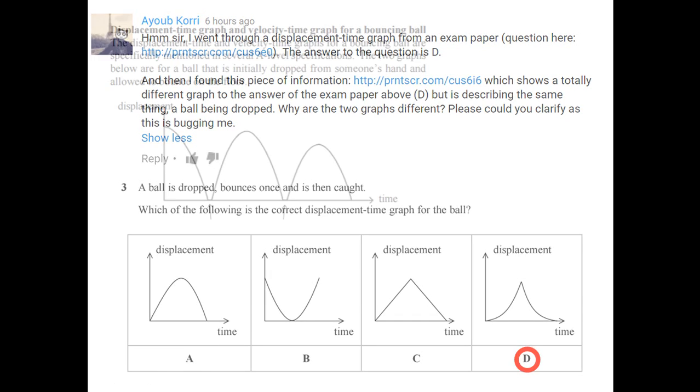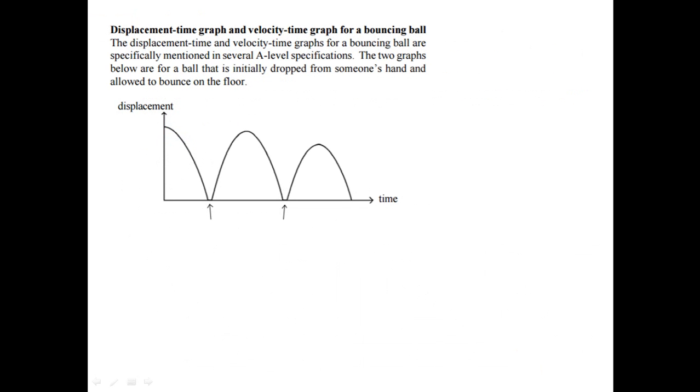But the information in the book is this. So this is the displacement time graph for a ball that's being dropped from someone's hand and is allowed to bounce along the floor.